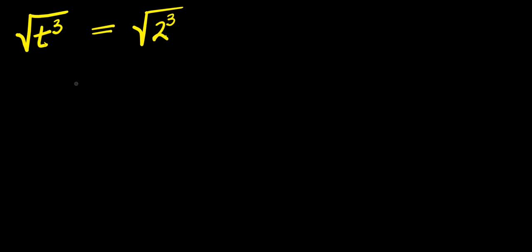Hello. How to solve this radical problem: we have square root of t to the power of three equals square root of two to the power of three. We are solving for all values of t that satisfy this equation.